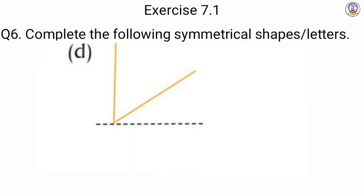Next is D — D में हम लोग को एक type की two lines दी गई हैं — एक straight line और एक slant line. इसके opposite side पे भी हम लोग एक straight line और slant line draw करेंगे, so figure बन जाएगा — जो alphabet K बन जाएगा.